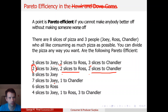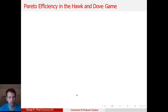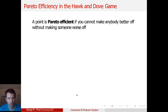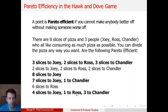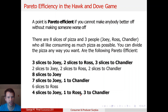Since all eight slices are being eaten in that scenario, then it is Pareto efficient. So as long as all eight slices are being eaten in this particular example, the division is Pareto efficient — even if it's not exactly fair.